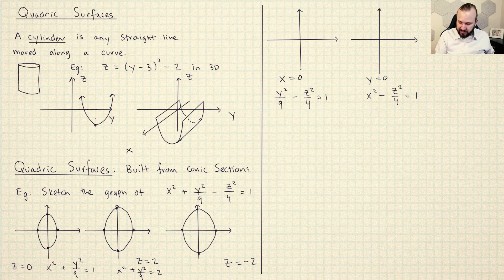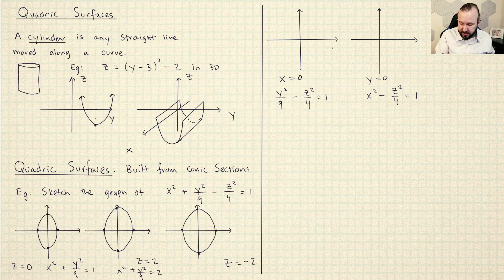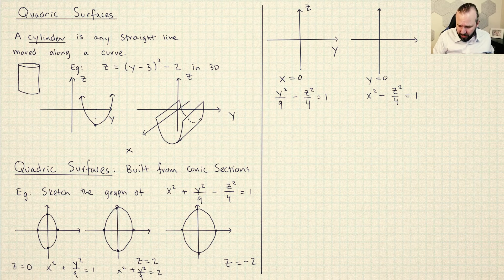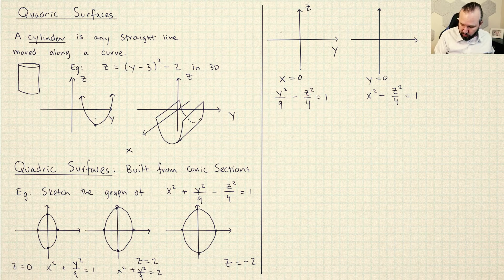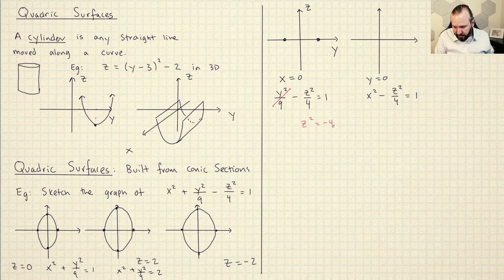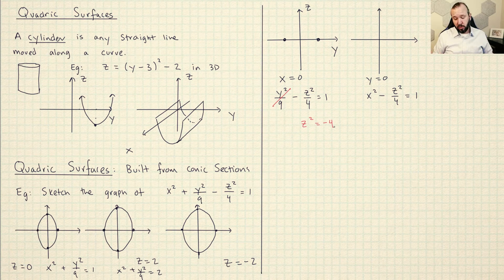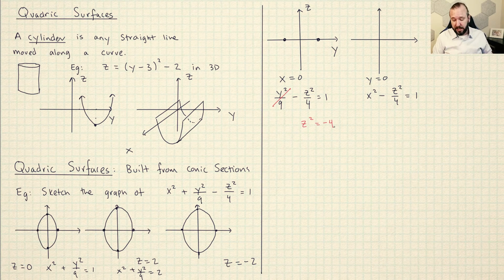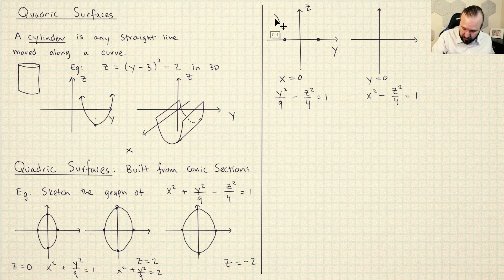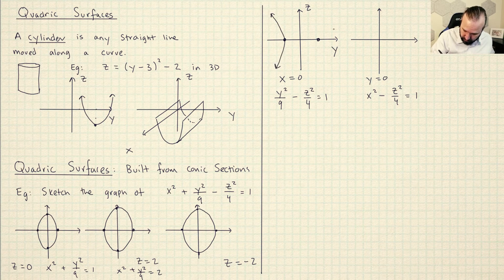So if I pick X is equal to zero, then the only letters remaining are Y and Z. So I'm going to put the Y axis here and the Z axis here. So what do you get here? This is going to be a hyperbola. And if I pick Z is equal to zero, then I'm going to get Y is plus or minus three. So I get something like this. And then if I pick Y is equal to zero, then I'm going to actually get Z squared is equal to negative four. So there are no real numbers that do this. So this means that this does not have any intersection with the Z axis. So this has got to be some kind of hyperbola that looks maybe like this.